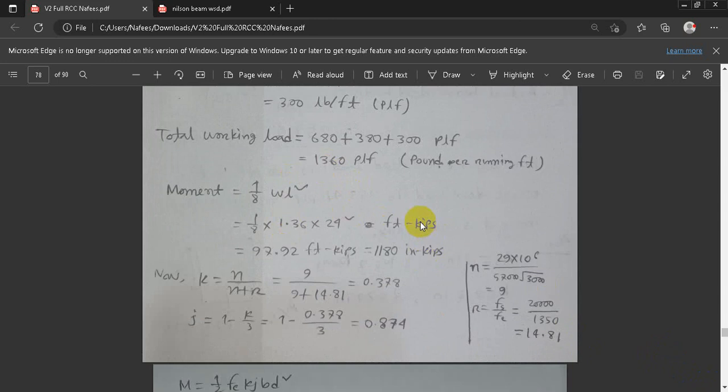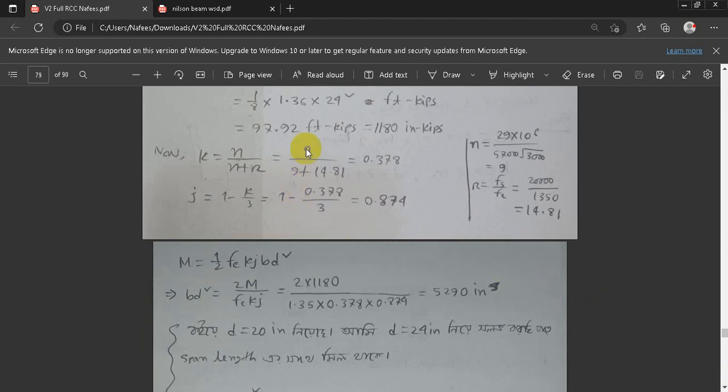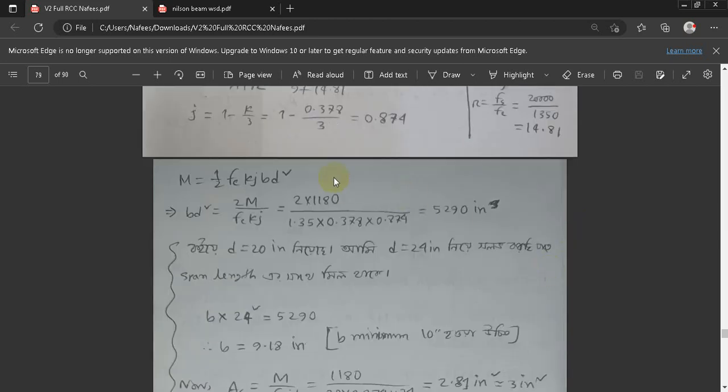The load is 1.36 kips. Now, the moment is 24 times that. So the moment is 97.92 kip-feet. Now, k is n divided by n plus r. So n is 9 divided by n plus r. This is n equals 9. So k is 0.378. j is 1 minus k by 3, so j is 0.874.